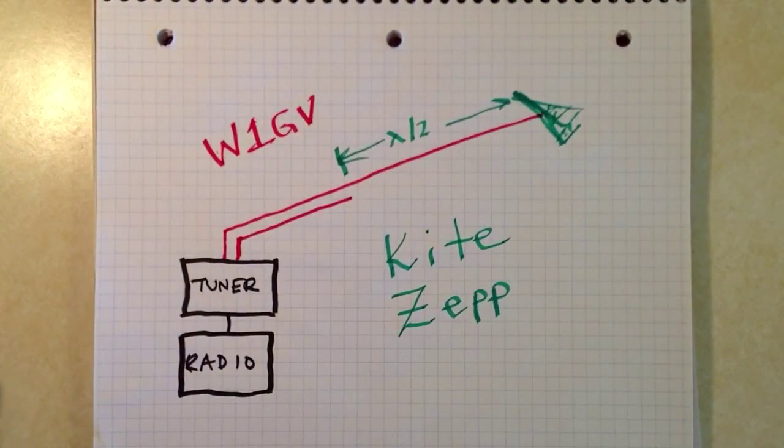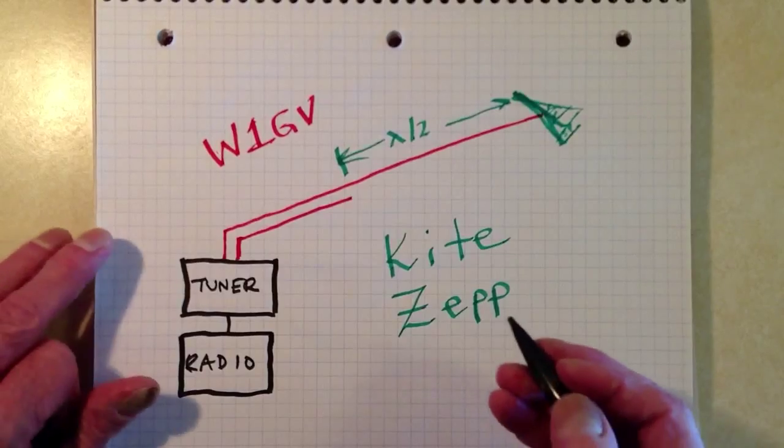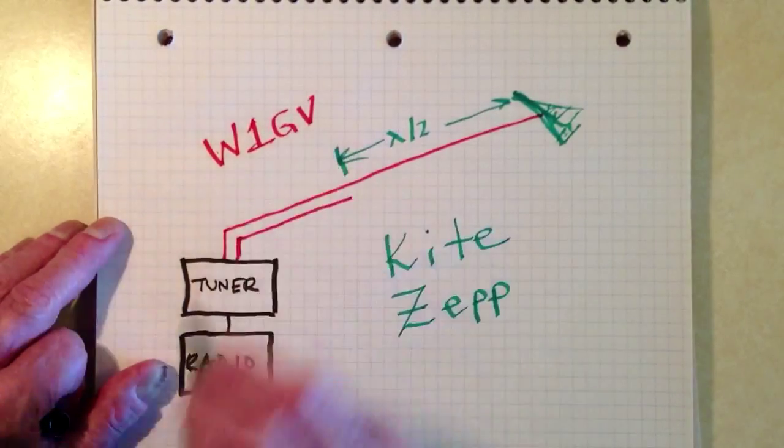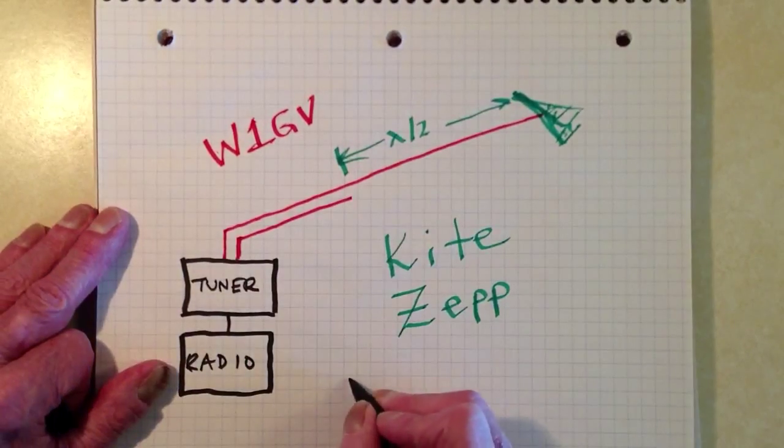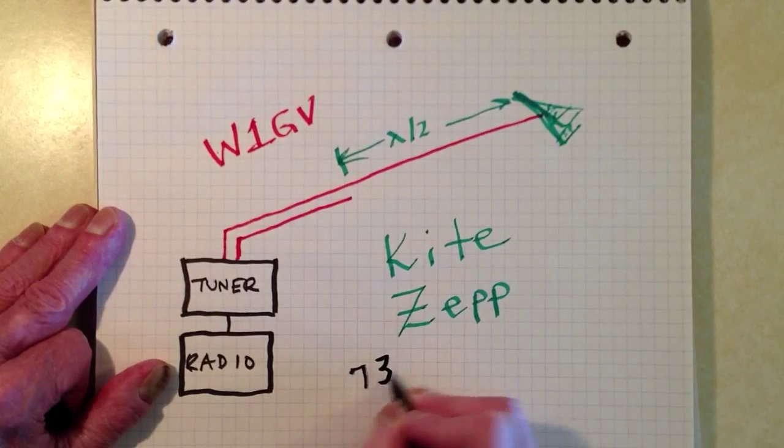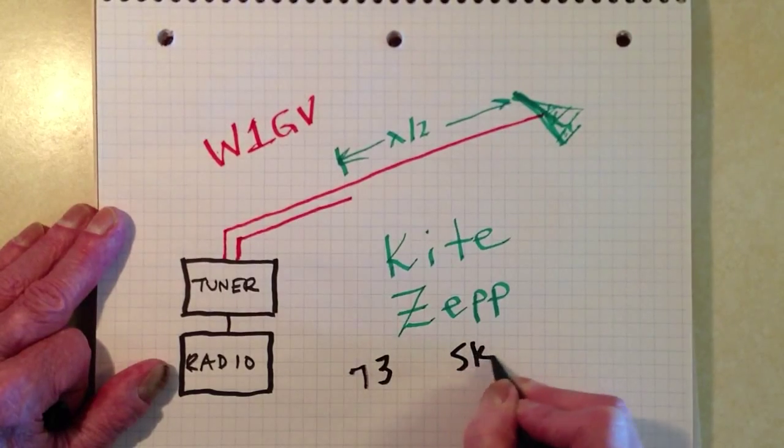But my favorite antenna of all, I said this was my second favorite. My favorite is one that I have described in other videos and will probably describe again and show you sometime, the Kite Zep. Stan Jibalisco, proprietor and operator of W1GV, saying 73 and so long for now.